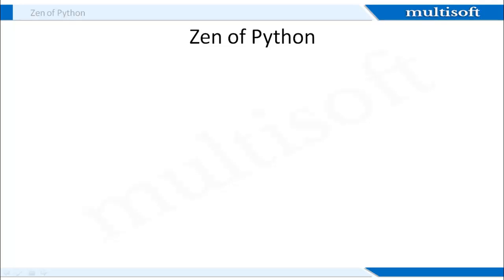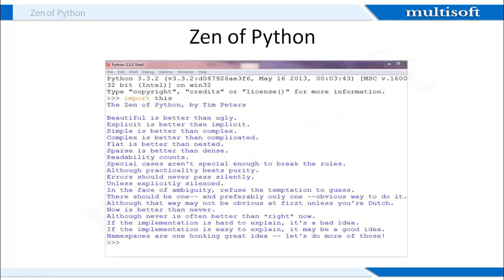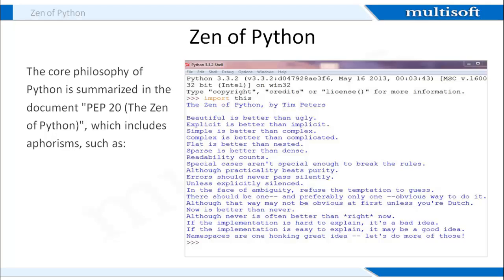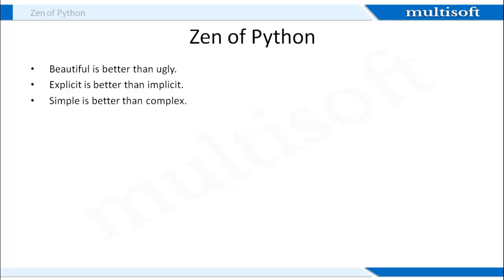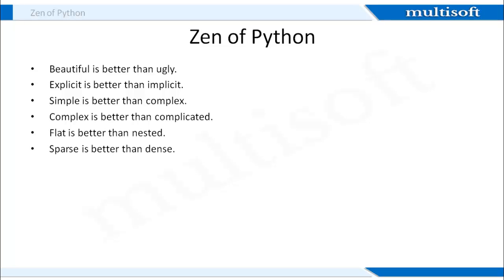Coming to the Zen of Python — it is a document containing a set of aphorisms that explain the core philosophy of the language. The Zen of Python has been written by Tim Peters. It states: Beautiful is better than ugly, explicit is better than implicit, simple is better than complex, complex is better than complicated, flat is better than nested, sparse is better than dense, readability counts.